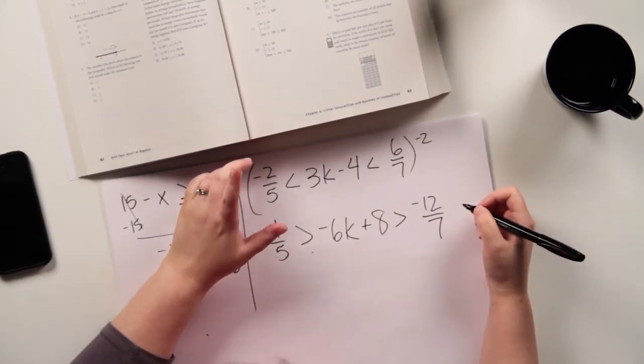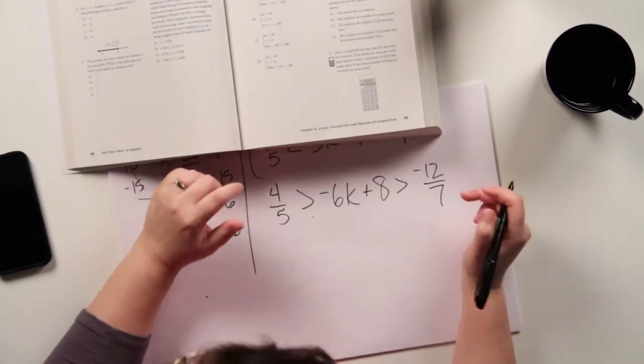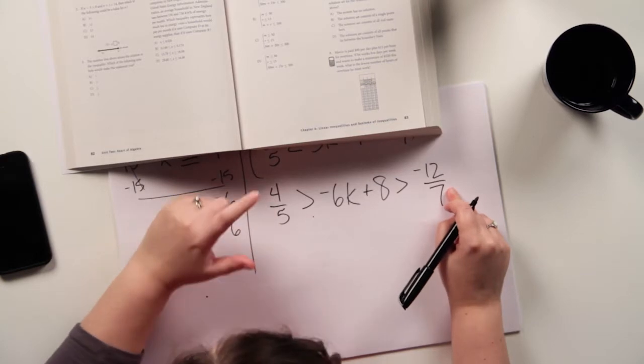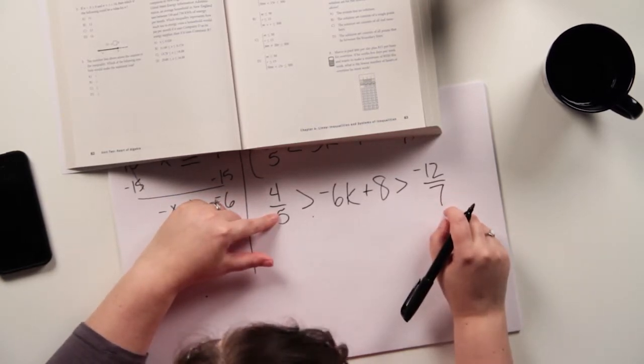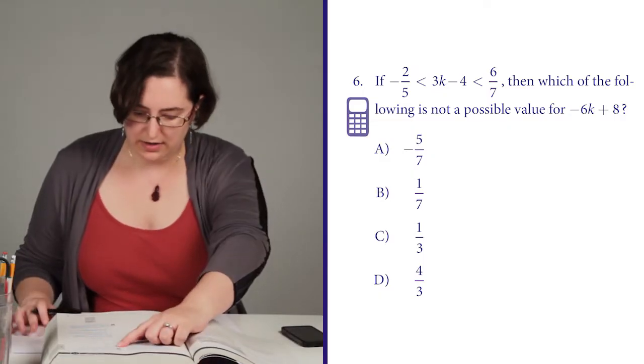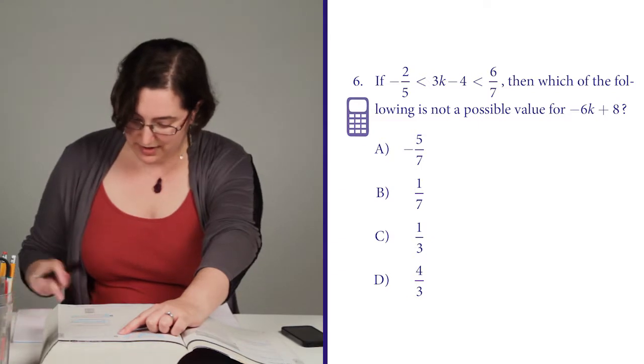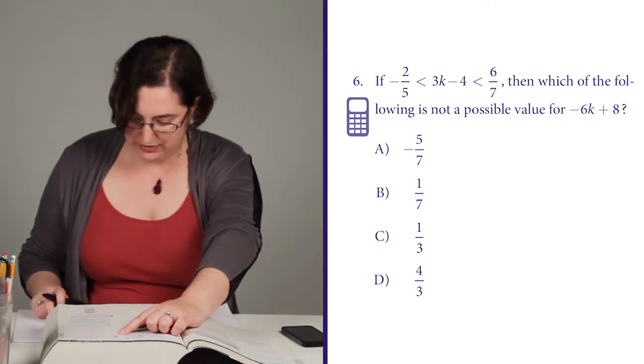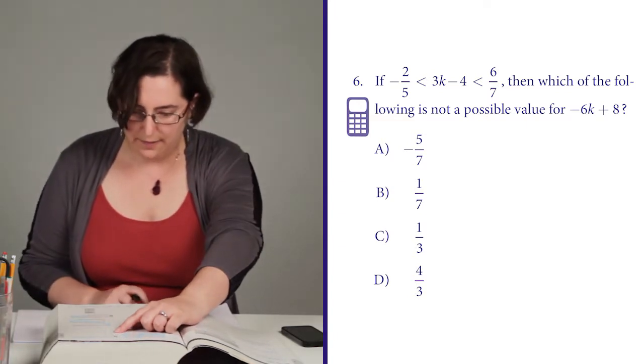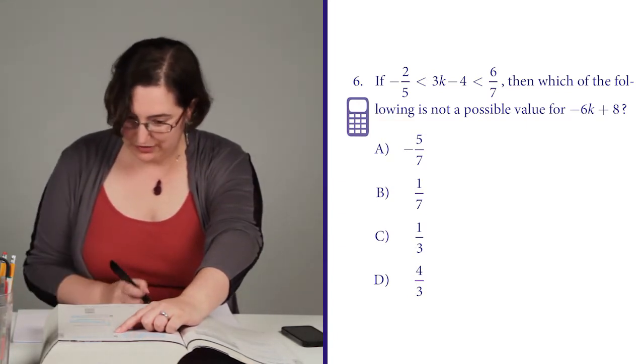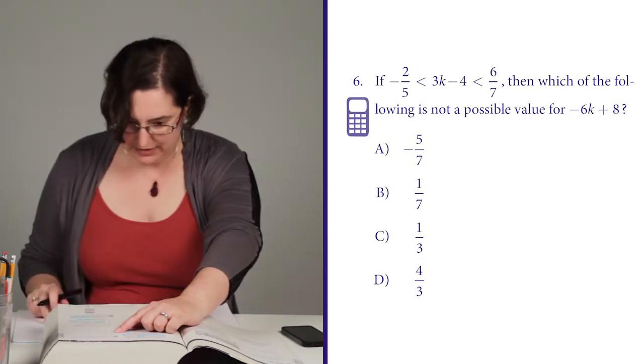Now, I am not done yet because I need to find something that isn't something that would fit within this range, something that isn't between 4 fifths and negative 12 sevenths. So negative 5 sevenths, that is going to be in between because it's bigger than negative 12 sevenths, but it's not positive, so it's not going to fit there. 1 seventh is definitely going to be less than 4 fifths, but it's not negative, so it's going to fit.